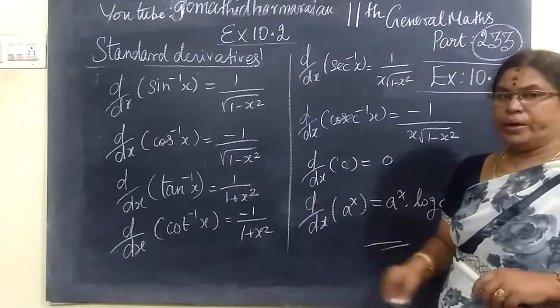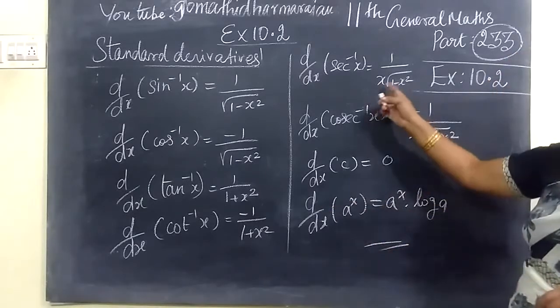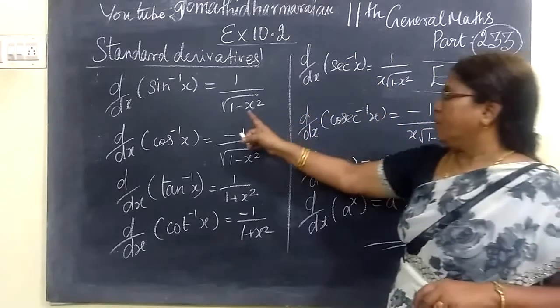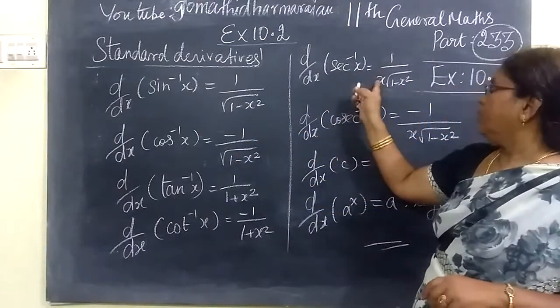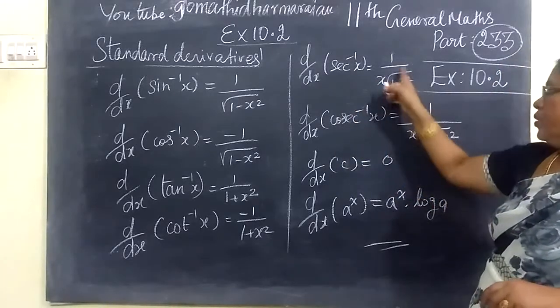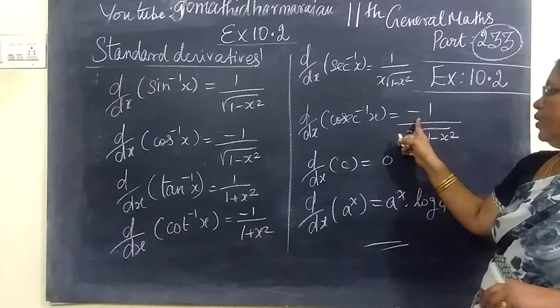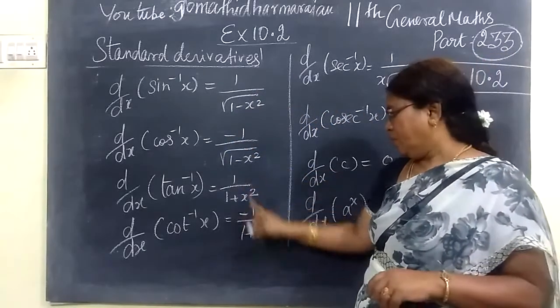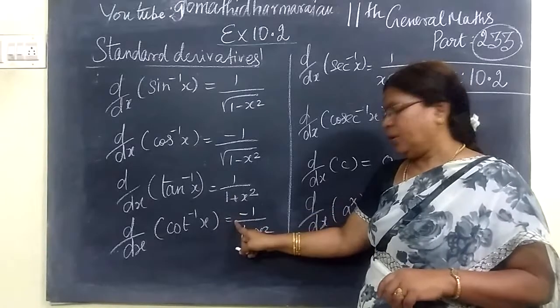Then cosec inverse is the same thing, but instead of 1, the root is x². So x√(x²-1). Cos is minus 1. It is the same. Cosec is minus 1. Both of these are the same, cosec is minus.